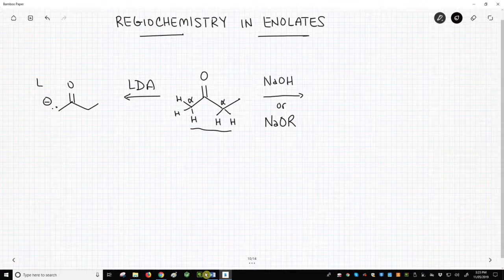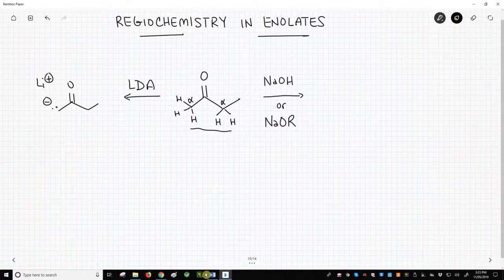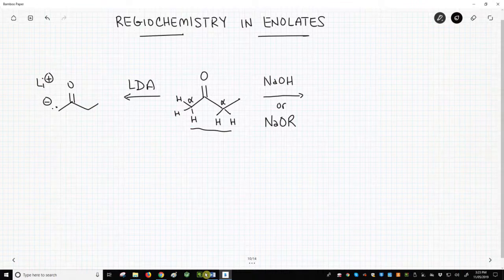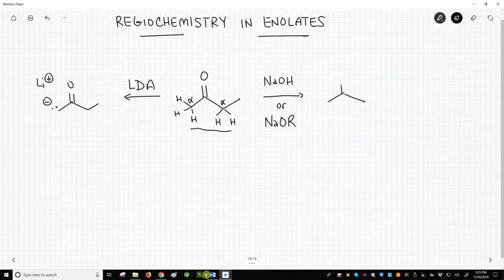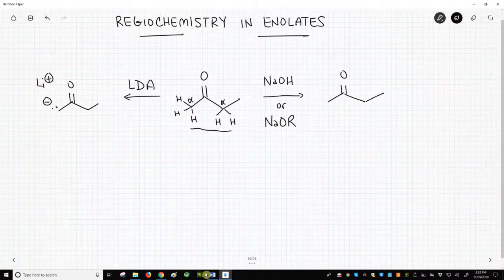So we have removed a proton from the CH3. For sodium hydroxide or alkoxides, you tend to observe removal of the more hindered proton to get the enolate on the right.